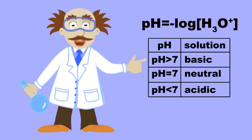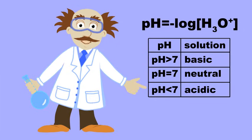Above pH 7 is where bases go. pH 7 is neutral, with acids below.